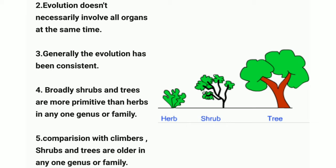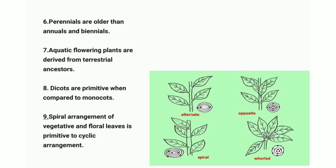Point five: in comparison with climbers, shrubs and trees are older within one genus or family. Climbers have vines — for example, the cucumber plant is a climber. Climbers are more advanced than shrubs and trees.